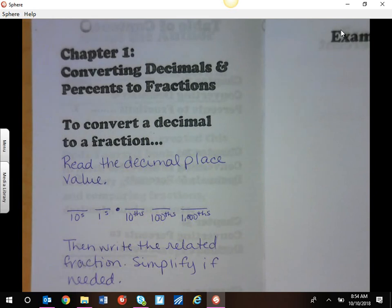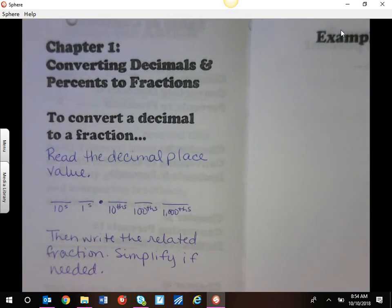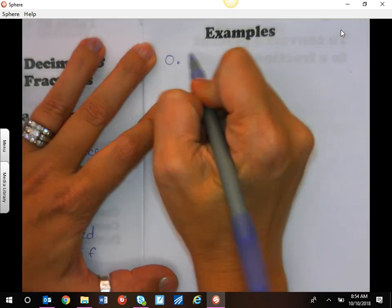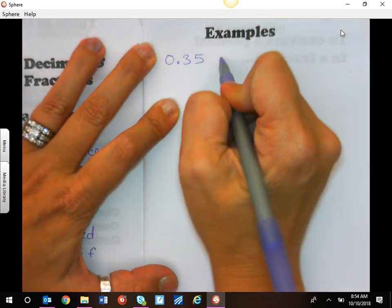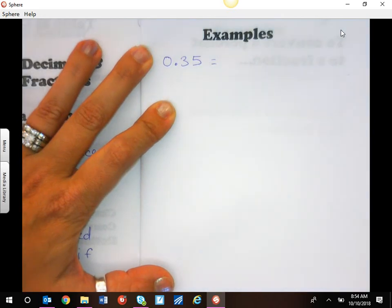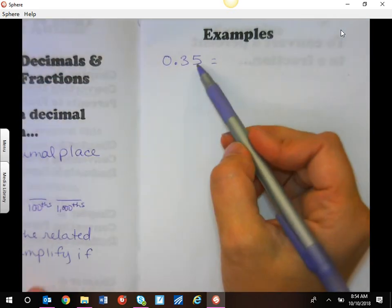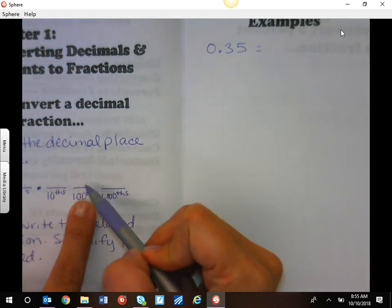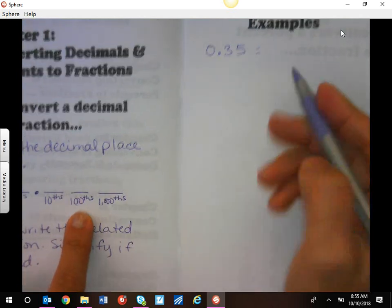So an example of this would be, if I gave you decimal 0.35, well that's not actually how we say this. We say 35, if we look at our place value here, if I put the three here and the five here, this would be 35 hundredths.